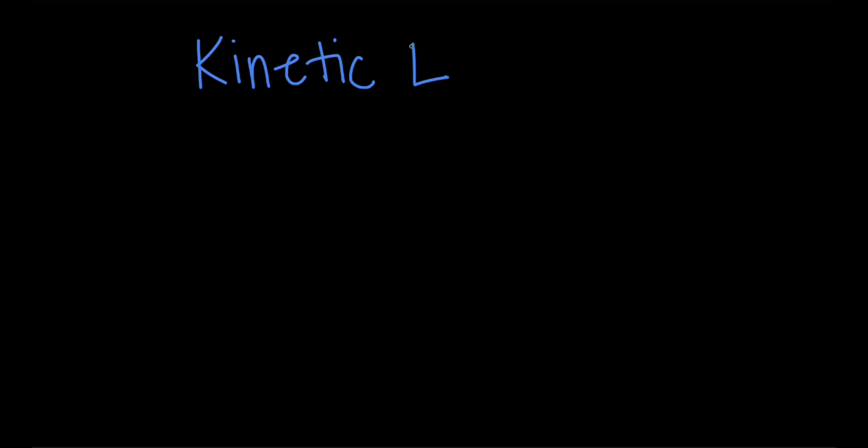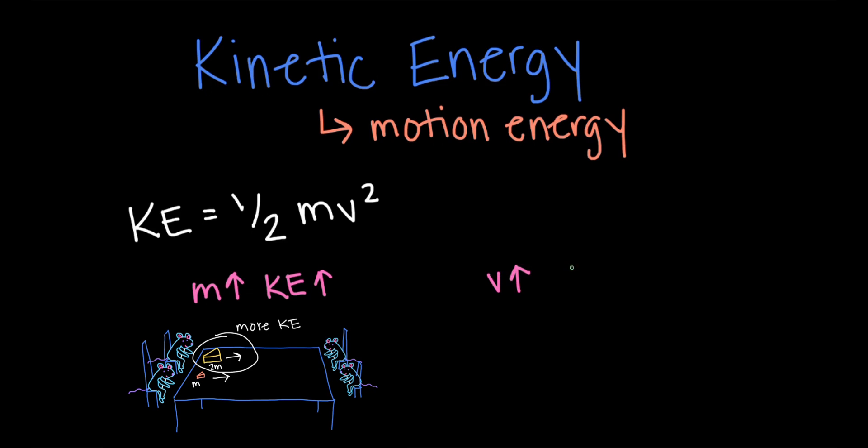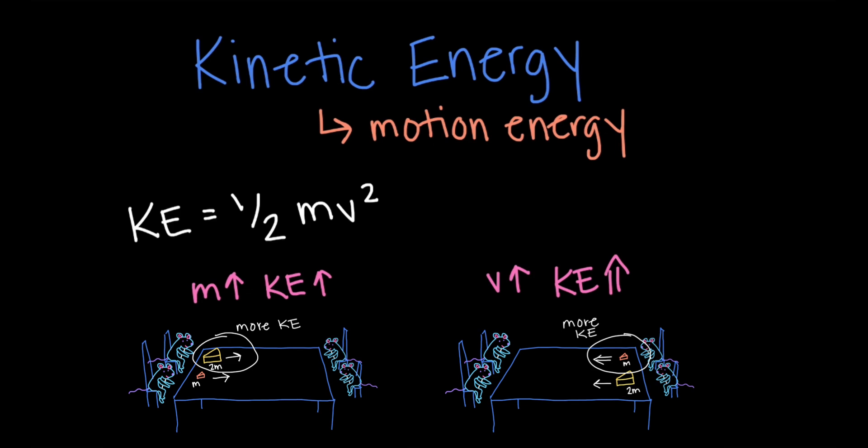In summary, kinetic energy is the motion energy of an object. The equation for kinetic energy is one-half mv squared, so as mass increases, kinetic energy increases, like the more massive cheddar versus the Swiss, and as velocity increases, kinetic energy increases even more, like the speedy Swiss versus the slower cheddar.